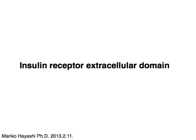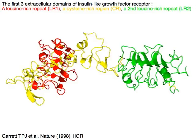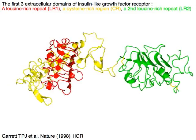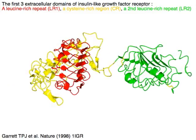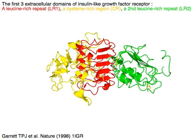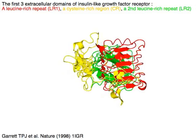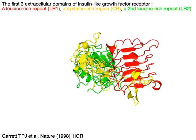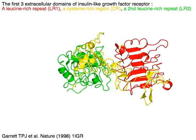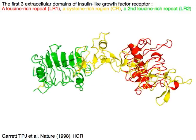These are the first three extracellular domains of the insulin receptor extracellular region: a leucine-rich repeat 1, or LR1, in red; a cysteine-rich region, CR, in yellow; and a second leucine-rich repeat, LR2, in green.